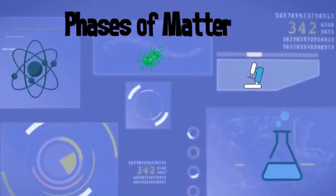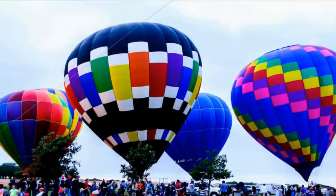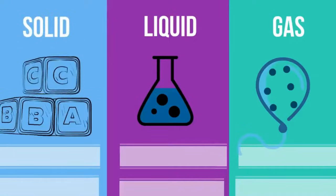Matter normally exists as either a solid, a liquid, or a gas. We call this property of matter the phases of matter. The three normal phases of matter have unique characteristics.